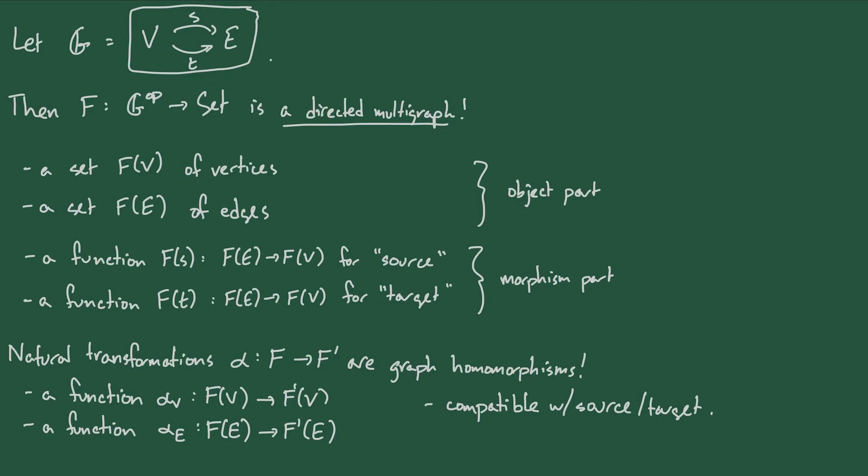What this example shows us is that there are a lot of things in mathematics that are presheaves. You know, there are a lot of concepts that are a bunch of sets and a bunch of functions between those sets. But it doesn't really tell us why it's useful to look at these things as presheaves. I mean, we don't need presheaves to tell us what graphs are. So I think this is a good example to keep in mind, but it doesn't really explain why presheaves are important.